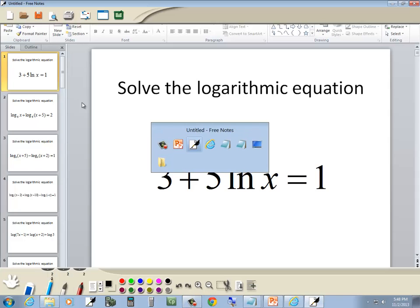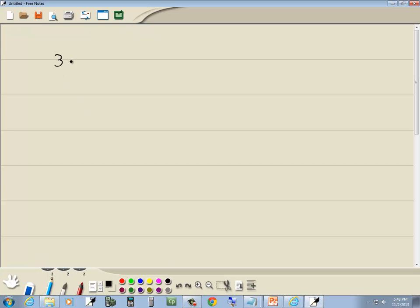Let's take a look at this problem. We've got 3 plus 5 natural log of x is equal to 1. Now our first step.